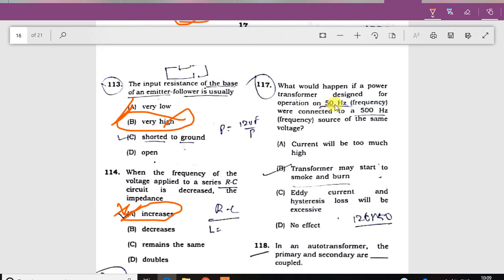The power transformer is designed for operation at 50 hertz frequency and we connect it to a 500 hertz frequency source of the same voltage. The transformer may start to smoke and burn.